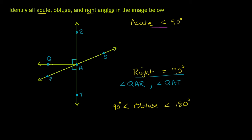And the reason why I know that angle QAT is also right is that if you take QAR, which was this one over here, and combine it with QAT, you actually form a straight angle. You go all the way around like this. And so their sum needs to be 180 degrees. So if QAR is 90 degrees, then QAT also has to be 90 degrees.